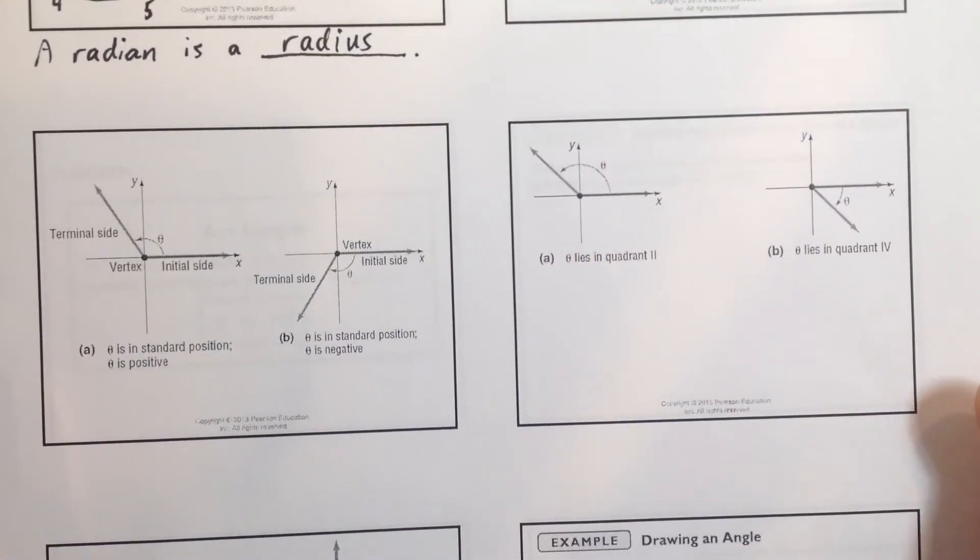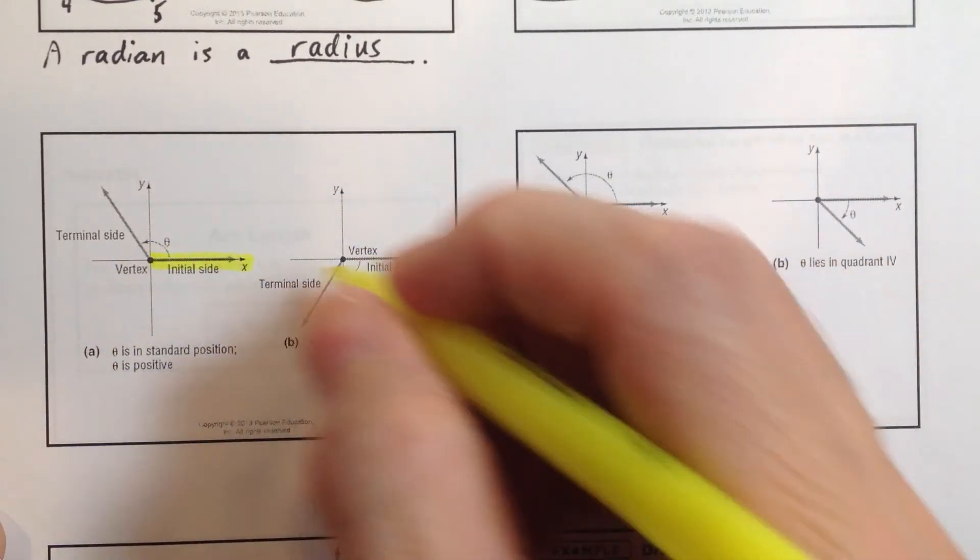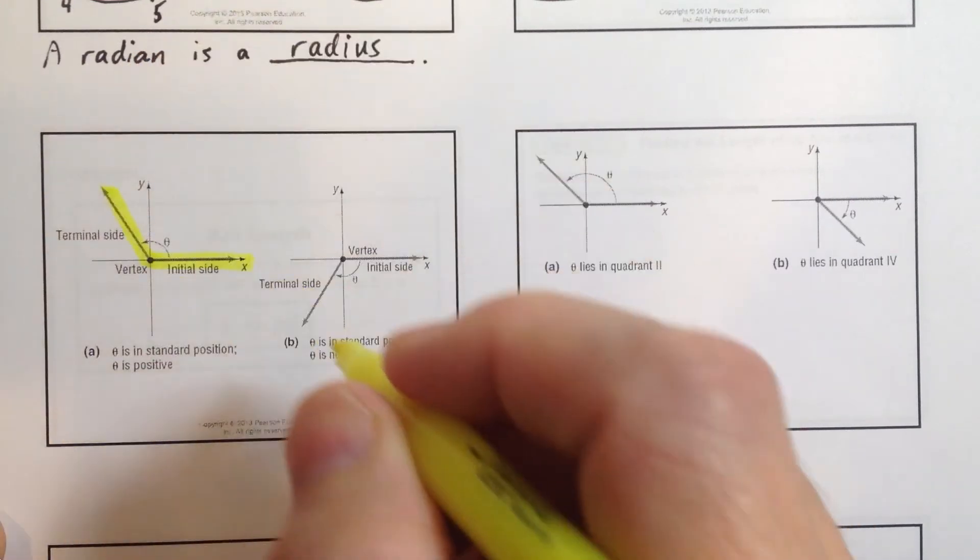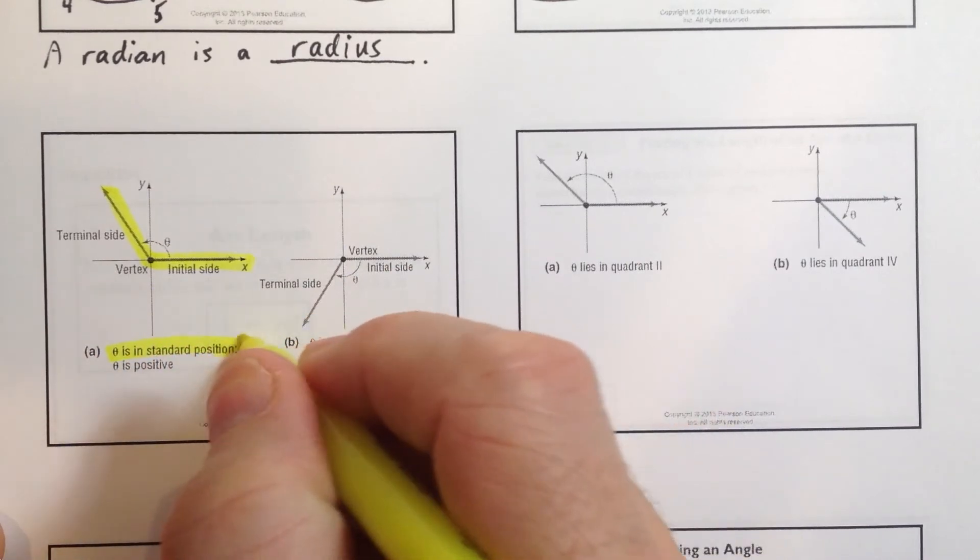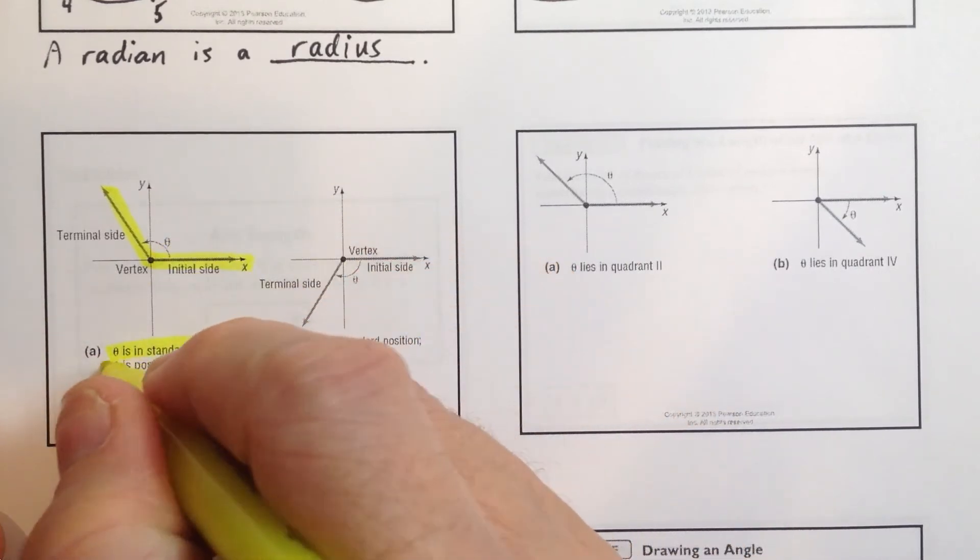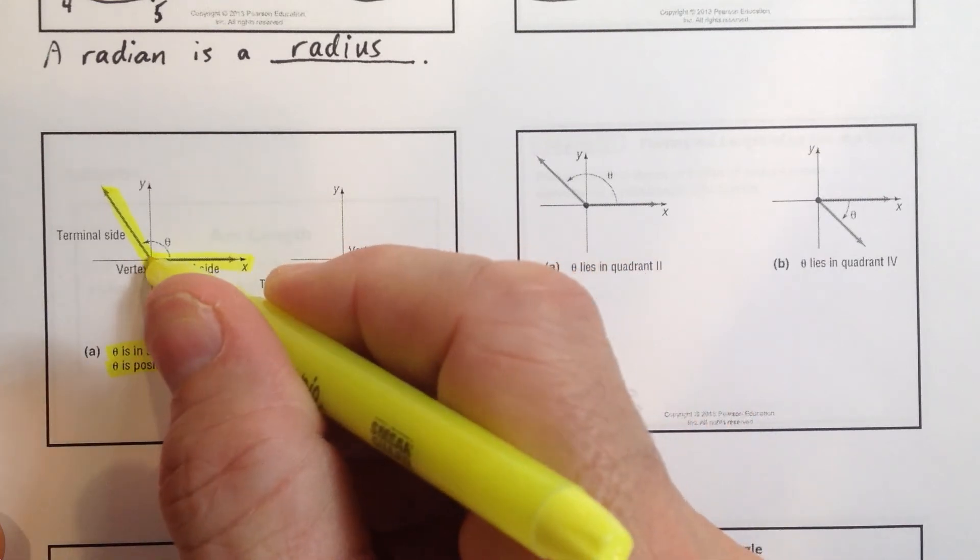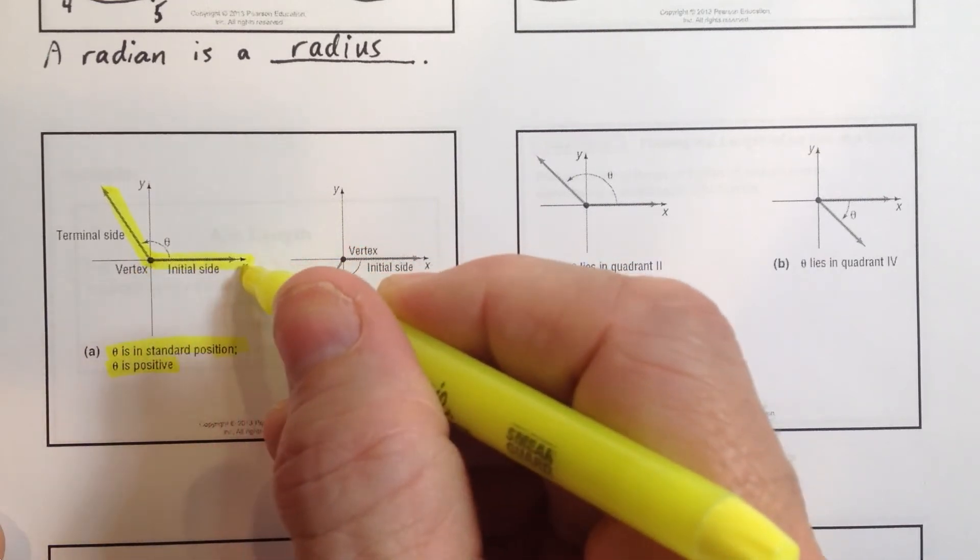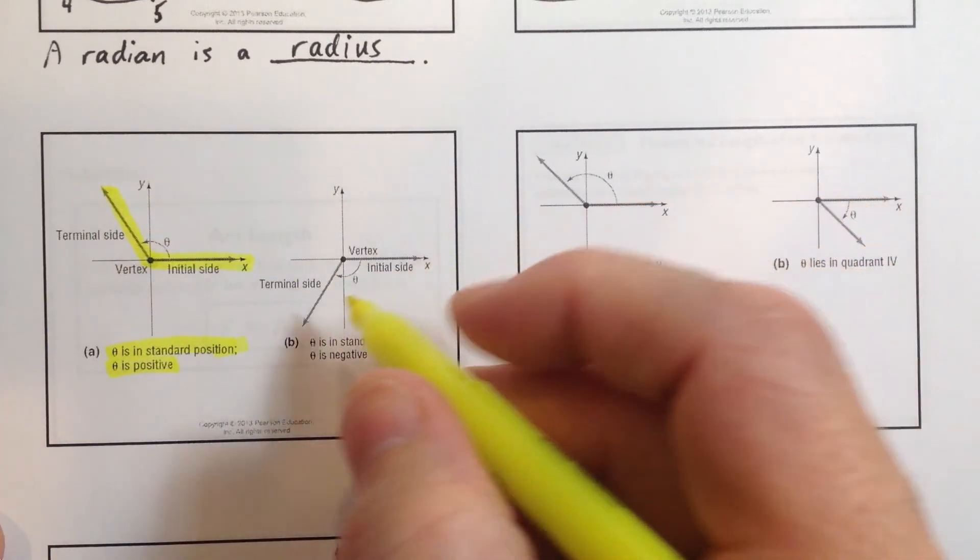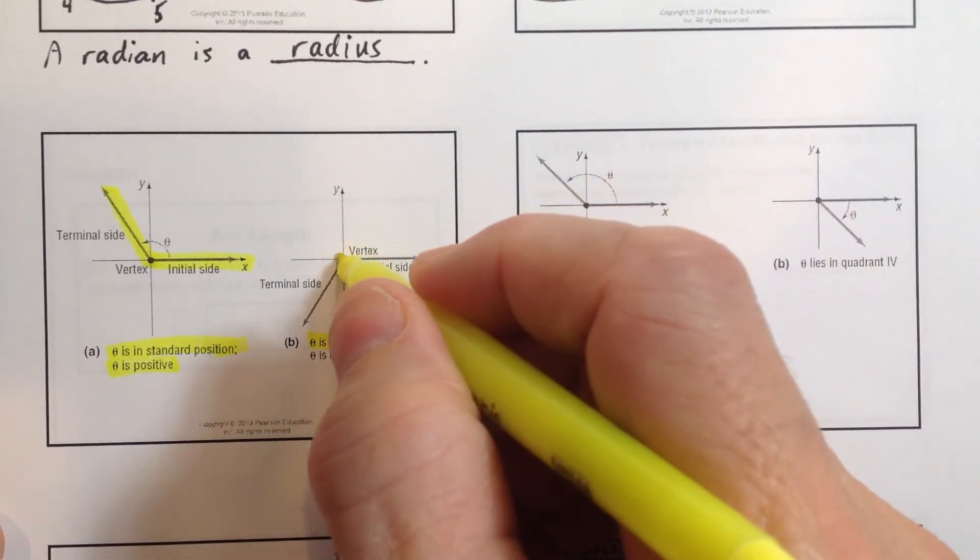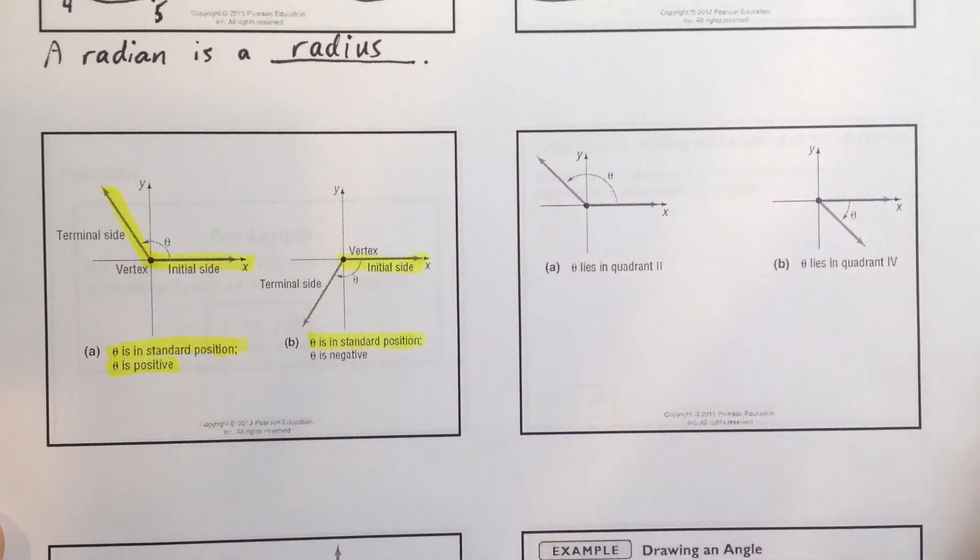So let's go ahead and continue. Again, we always have to start at the initial side, and we measure the angle in terms of radians or degrees. But theta, we say here, is in standard position. Theta is positive. Standard position is when the initial side is right there, starting at the origin, and moving to the right along the x-axis in the terminal side. So that's an angle in standard position. This is also an angle in standard position. Again, when the initial side is the side where we start here at the origin and move to the right.